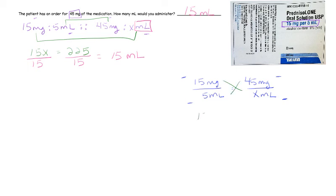For the fractional ratio and proportion, you do want to cross multiply to solve. So this would be 15 times x, which is 15x, is going to be equal to 225.